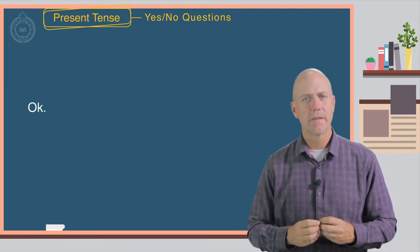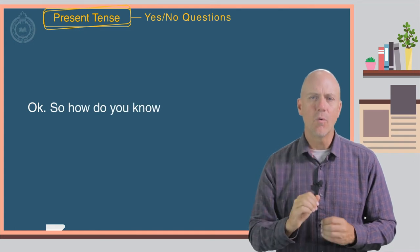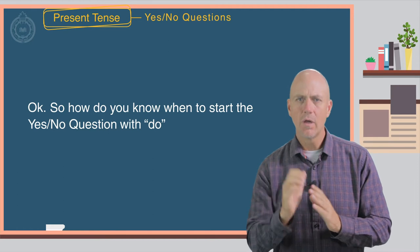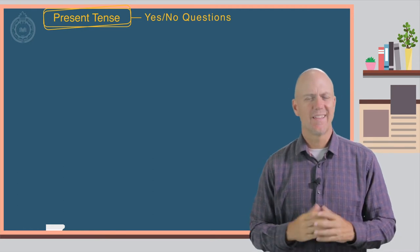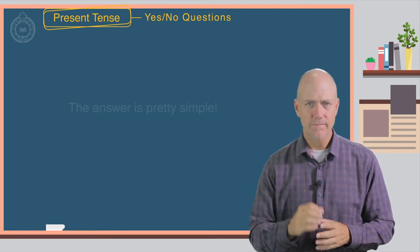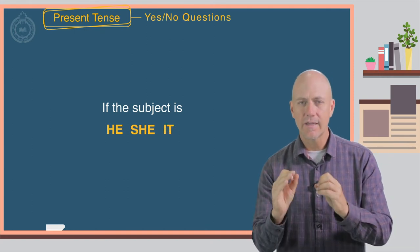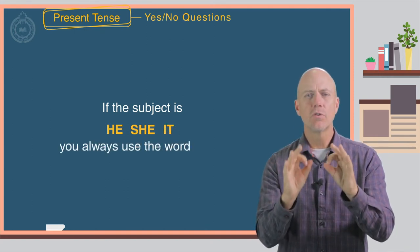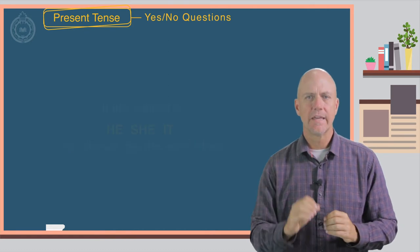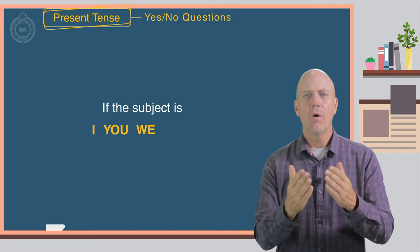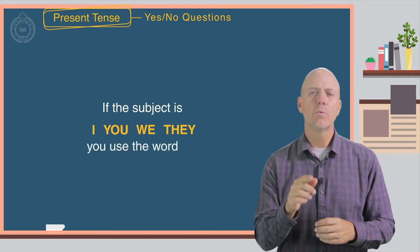Okay, so how do you know when to start the yes-no question with do or does? The answer is pretty simple. If the subject is he, she, or it, you always use the word does. If the subject is I, you, we, or they, you use the word do.